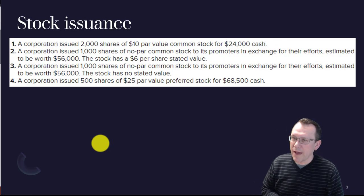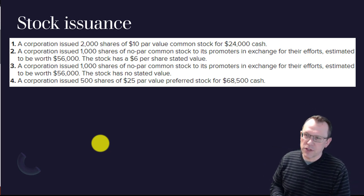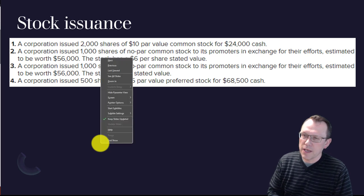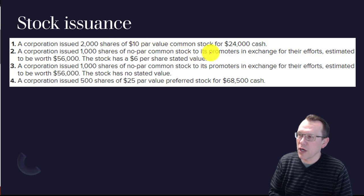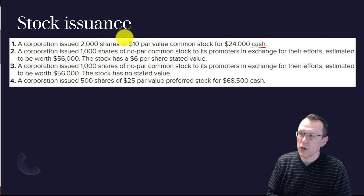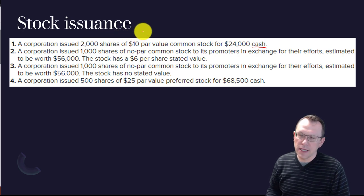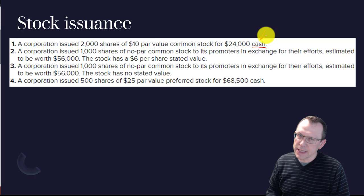The first one we have here is just issuance of stock — the simple start for us. We have four journal entries that we're doing. The first one: we are issuing 2,000 shares of $10 par value common stock for $25,000 cash. Our debit is going to be to cash — that's what we're getting. Whatever we're getting for our stock is typically going to be the debit.